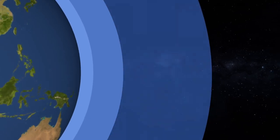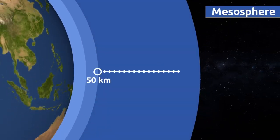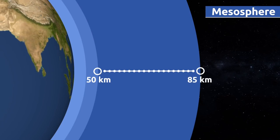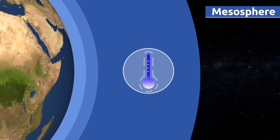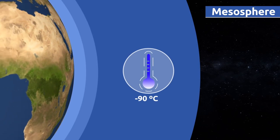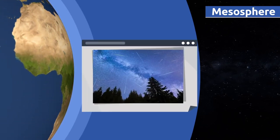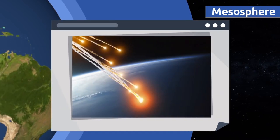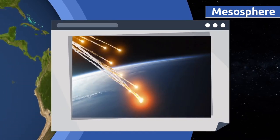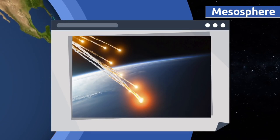The mesosphere extends to an altitude of 50 to 85 kilometers above sea level. The mesosphere is the coldest layer of the atmosphere. Temperatures can drop down to 90 degrees Celsius below zero. Shooting stars occur in the mesosphere. These are meteors that travel through space. As soon as they hit the mesosphere, they start burning up, leaving a tail behind them.